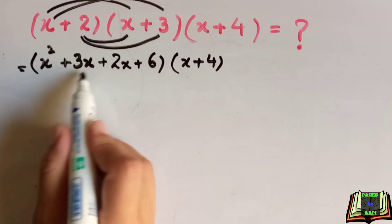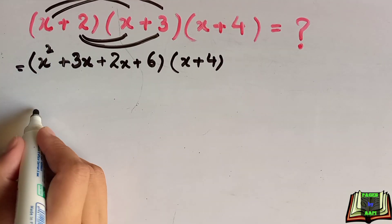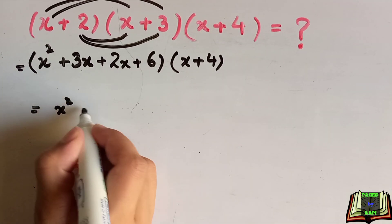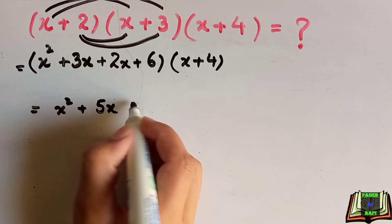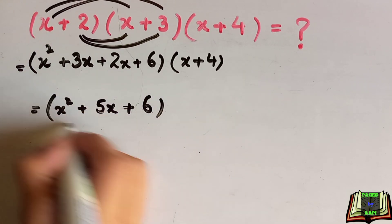In the next step we are going to add these 3x plus 2x because it has the same variable. 3x plus 2x is 5x plus 6 into x plus 4.